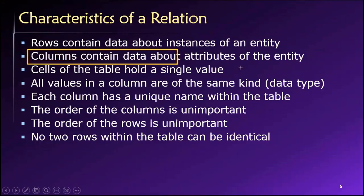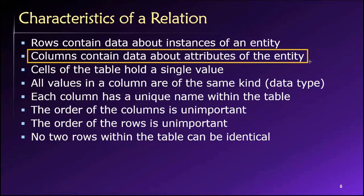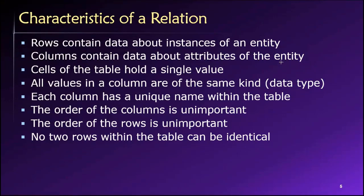Columns on the other hand are attributes of the entity. So we may have the first column might be an employee ID, and what that means is every value stored in that column is an employee ID. The second column might be a name, and that means every value in that column will be a name. Third column might be a phone number. Every value in the third column will be a phone number. So columns are attributes of the entity. The rows represent instances of the entity.